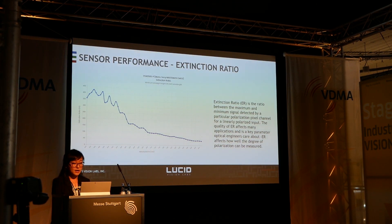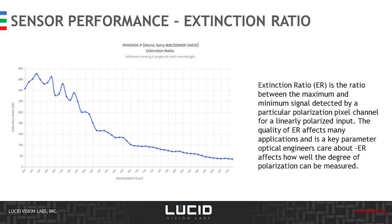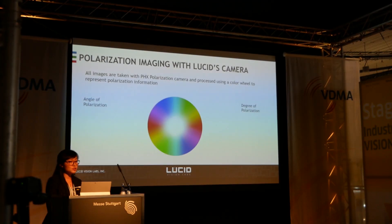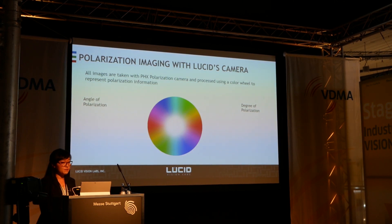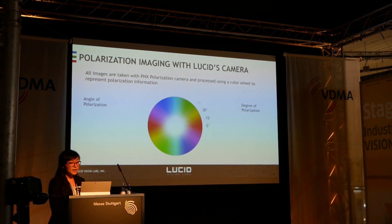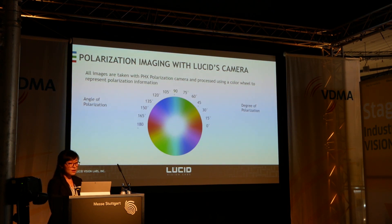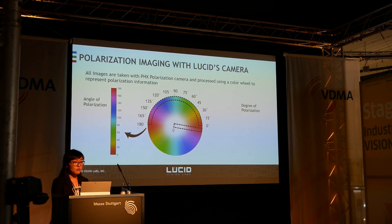Extinction ratio is also a metric design engineers care about a lot, because it affects how well the degree of polarization can be measured. We've characterized extinction ratio at various wavelengths as well. To visualize polarization data, if you take an image with our Phoenix polarization camera, you can map the polarization data onto a color wheel in HSV color space. The angle of polarization is matched to a different color on the color wheel, and the degree of polarization information is mapped onto the saturation of a particular color.